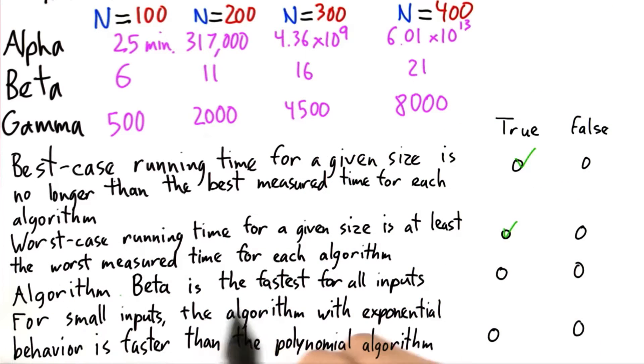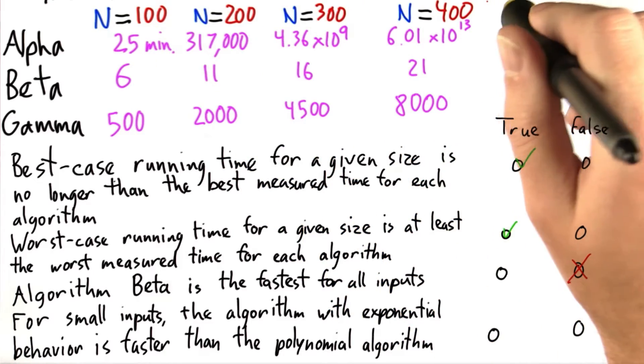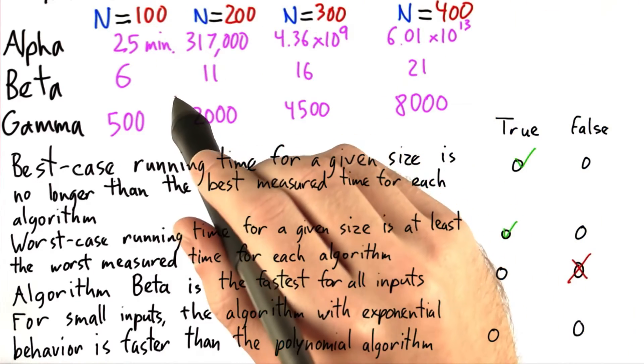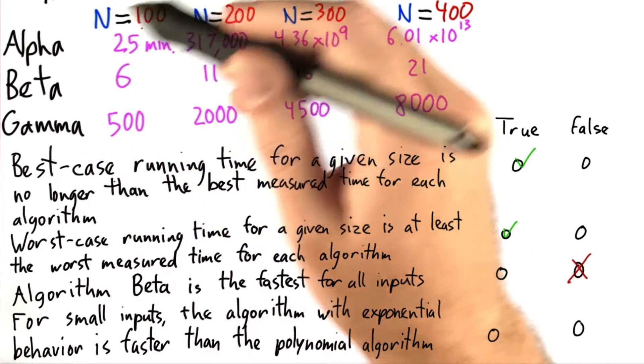Now for the third question, algorithm Beta is the fastest for all inputs. This is actually false. And even though it's actually true for all of the inputs that we tested, it might not be true for much smaller inputs. For example, n equals 1 or 2.